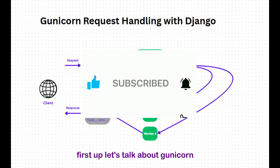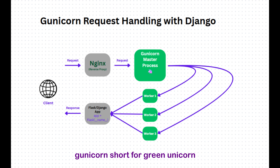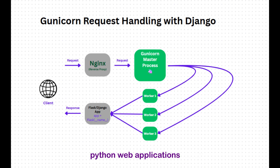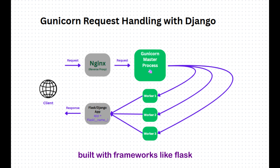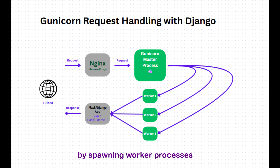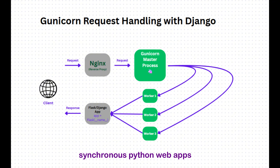First up, let's talk about Gunicorn. Gunicorn, short for Green Unicorn, is a WSGI server for Python. WSGI stands for Web Server Gateway Interface, which is a standard for synchronous Python web applications. Gunicorn is designed to run apps built with frameworks like Flask, Django, or Pyramid. It's super reliable for production environments because it can handle multiple requests by spawning worker processes. Think of it as a workhorse that powers traditional synchronous Python web apps.